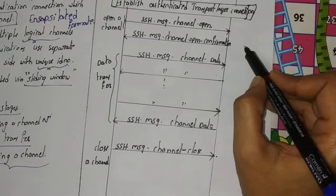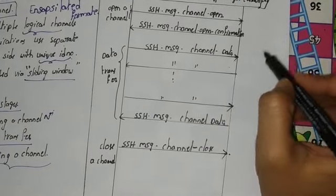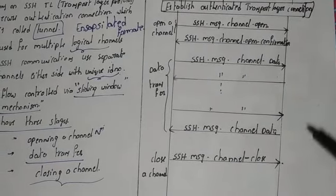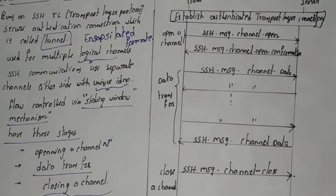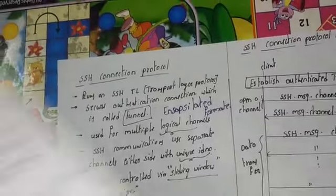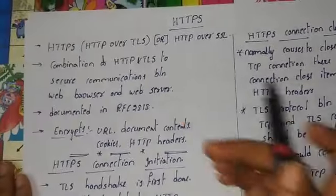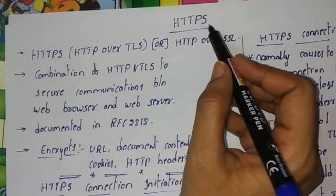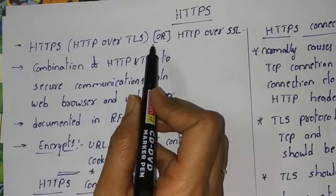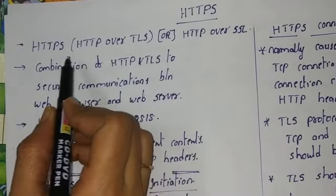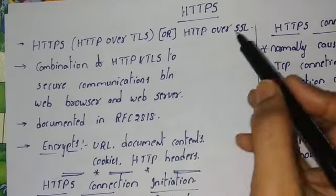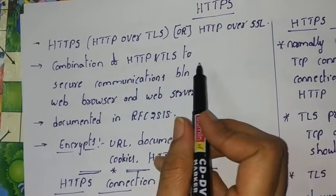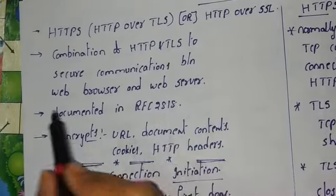This completes the overall review of SSH or Secure Shell, covering the different types of protocols and how they communicate. The next protocol to cover is HTTPS. While HTTP is familiar, HTTPS is called so because it is HTTP over TLS for secure communications. It is HTTP over TLS or HTTP over SSL, and the combination of HTTP and TLS forms the HTTPS protocol.